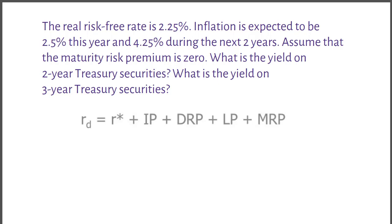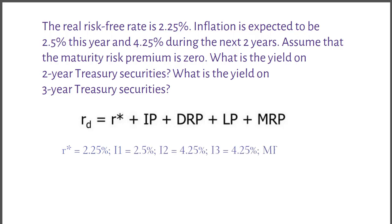To solve this question, we bring back the interest rate equation: R equals R-star plus IP plus DRP plus LP plus MRP. The given values are: R-star equals 2.25%, inflation in the first year is 2.5%, inflation in the second year is 4.25%, inflation in the third year is 4.25%, and the maturity risk premium is zero.